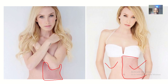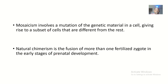I'm sure you guys have seen this. Some human beings may have a fair face on one side and a very dark side on the other — half of their face is fair, half is very dark. That's how chimerism looks. Chimerism or mosaicism involves a mutation of genetic material in a cell, giving rise to a subset of cells that are different from the rest.